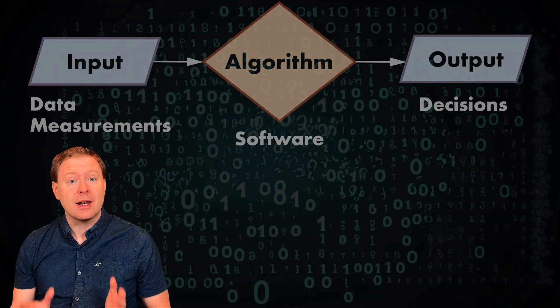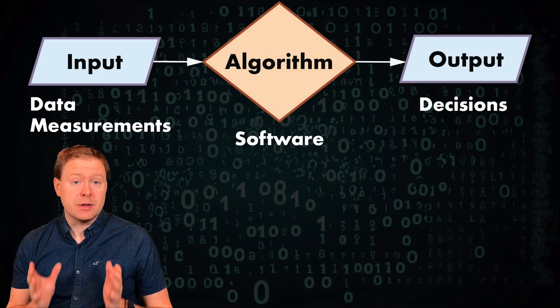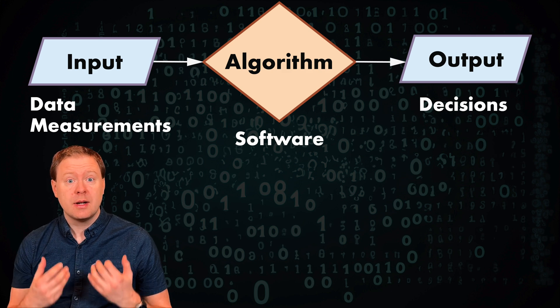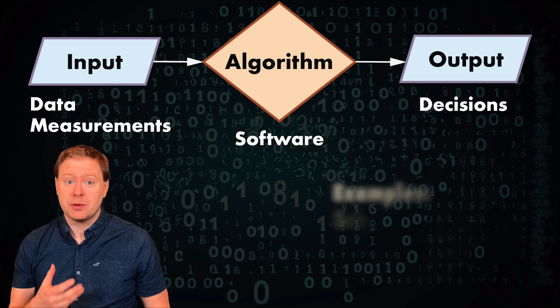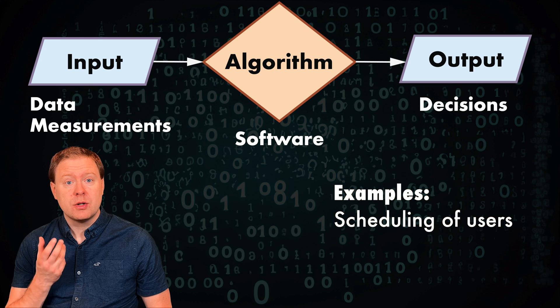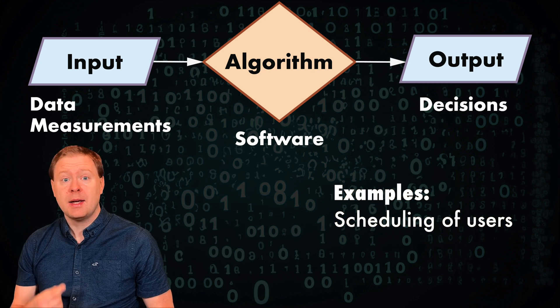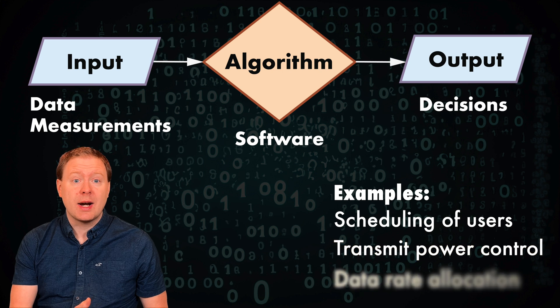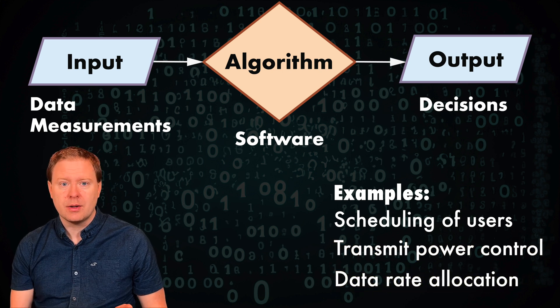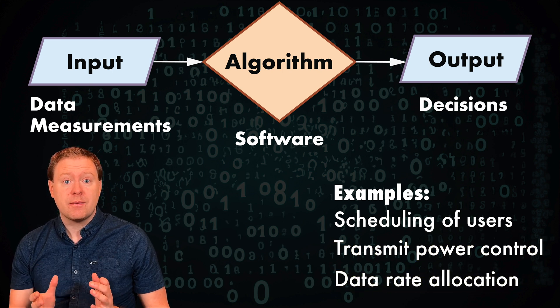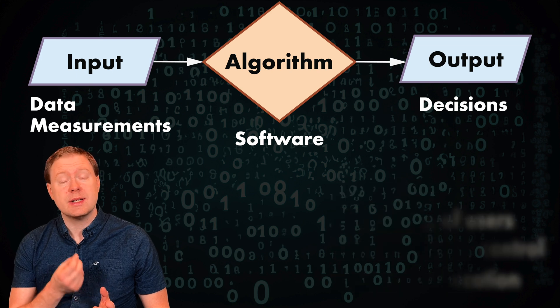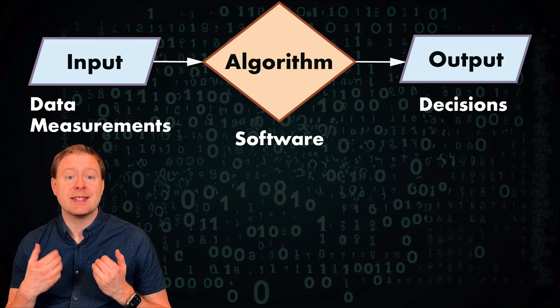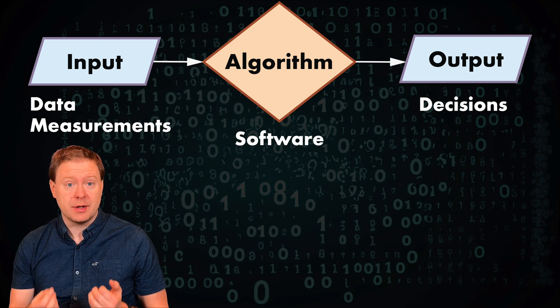Mobile networks are full of algorithms. These are pieces of software that determine how to carry out particular tasks. These tasks might be, for example, to decide which mobile phone to serve at a particular time, at a particular frequency, using what power, what data rate you should allocate, and so on. An algorithm typically takes inputs, which is data, some measurements for example, and then the output is a decision on how to carry out the task.